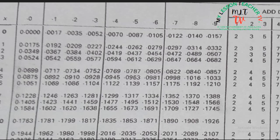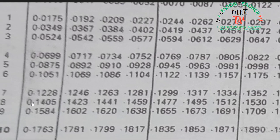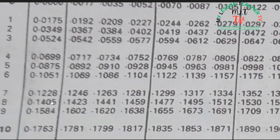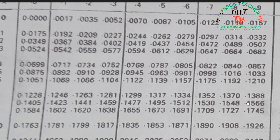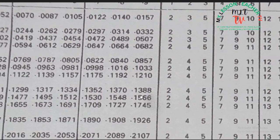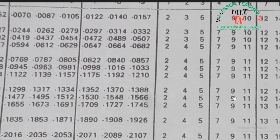Go to your trig table and check for 14, 15. We have 0.1405. Look for a difference of 10. When you work this way, we have a difference of 9.